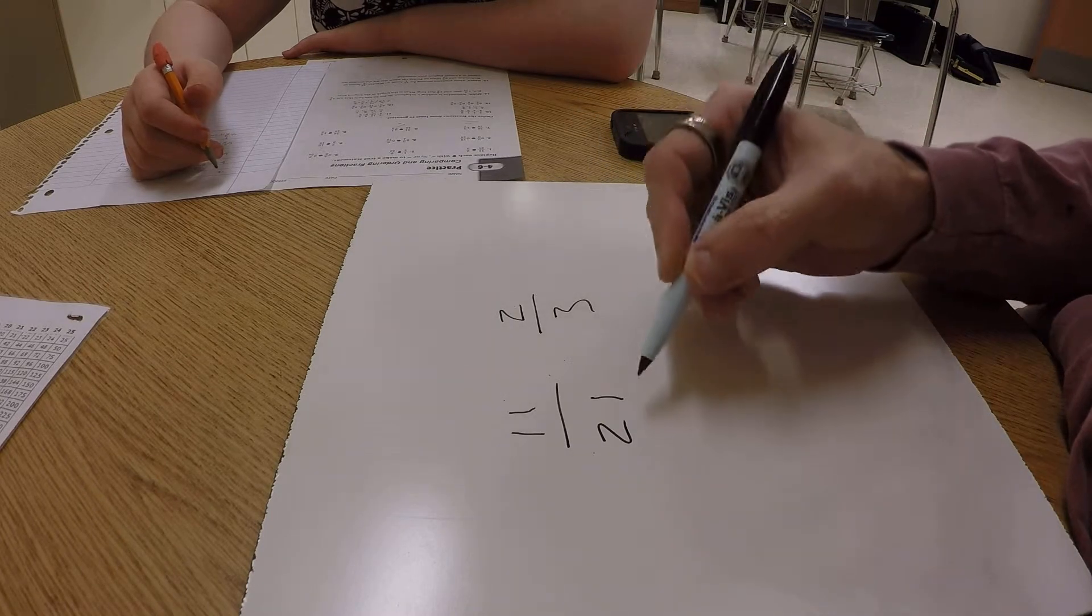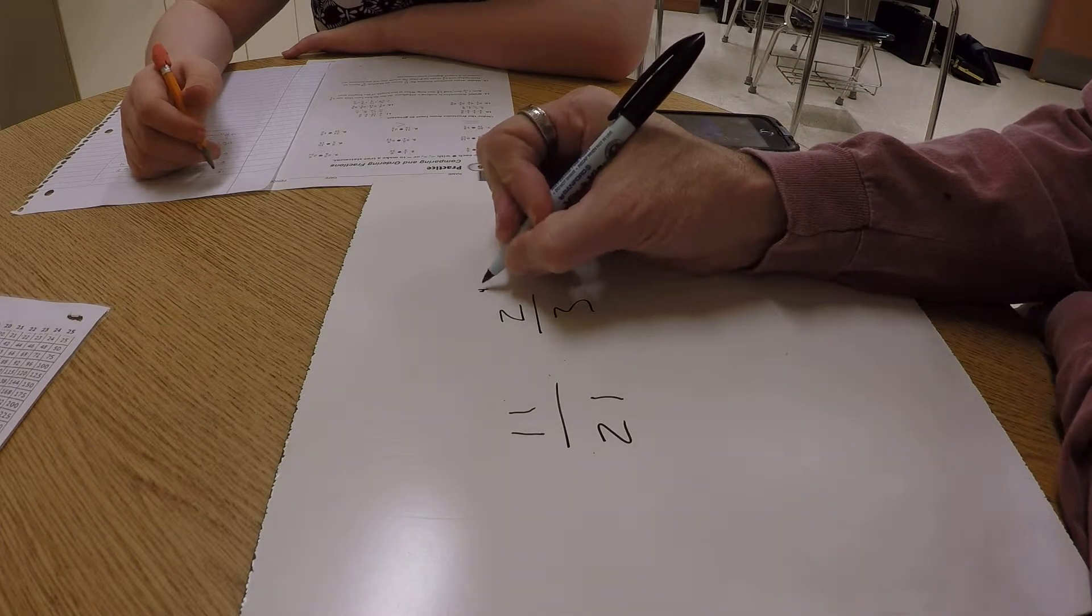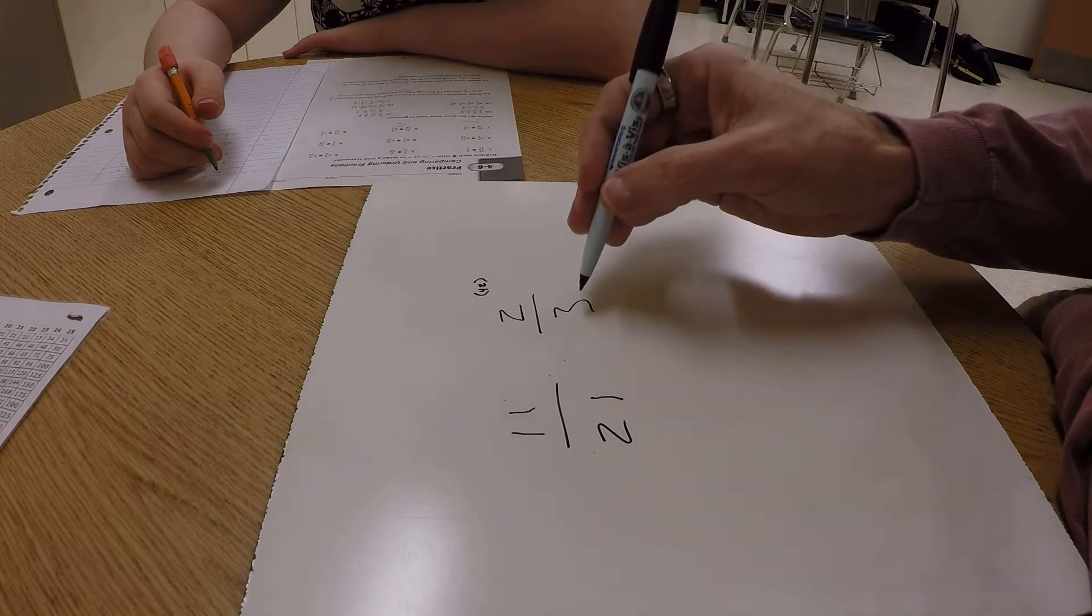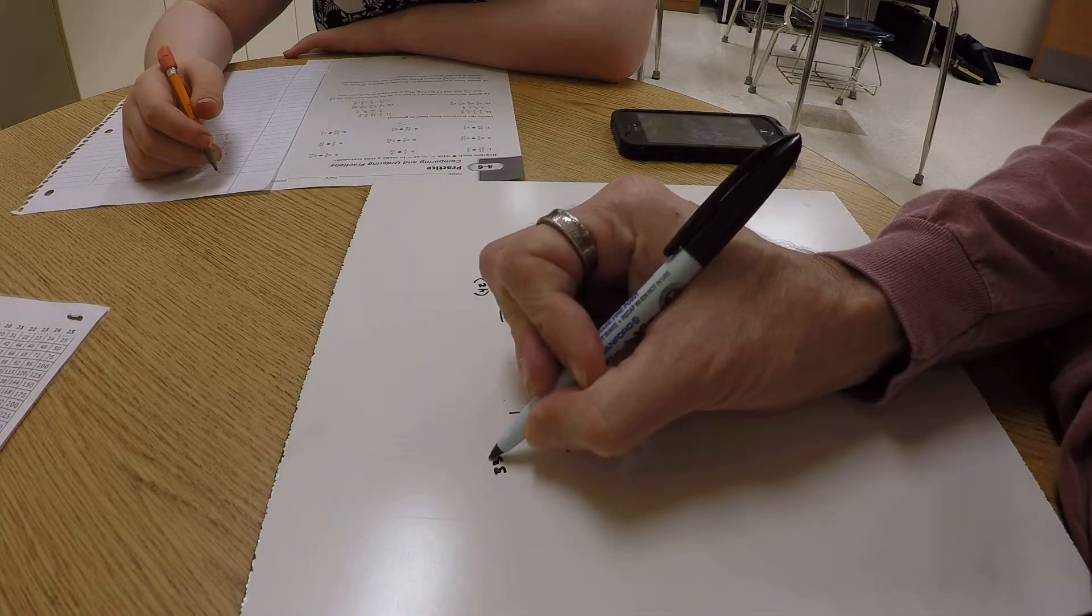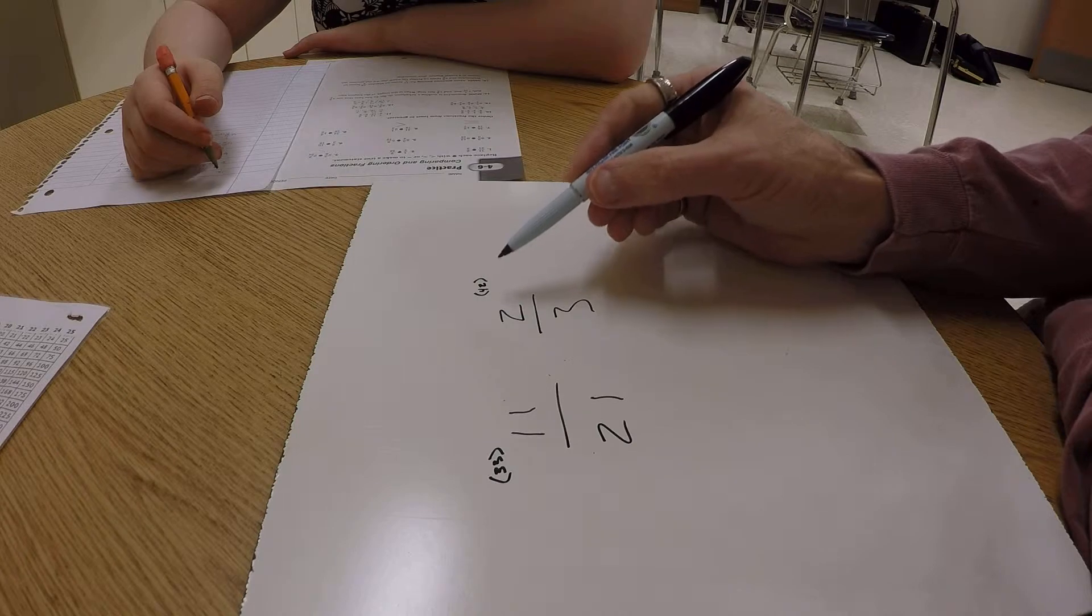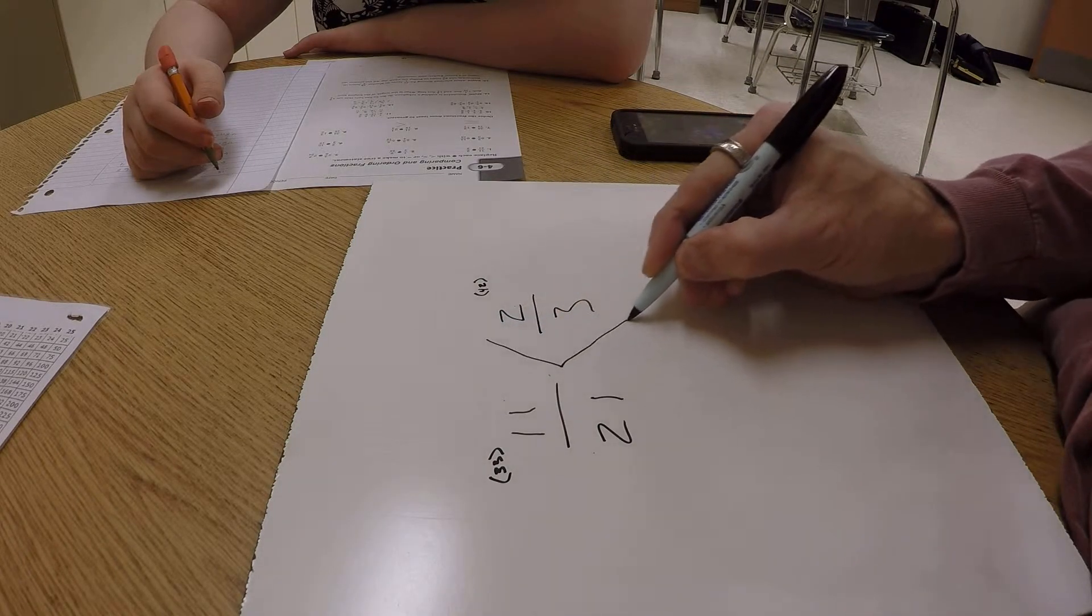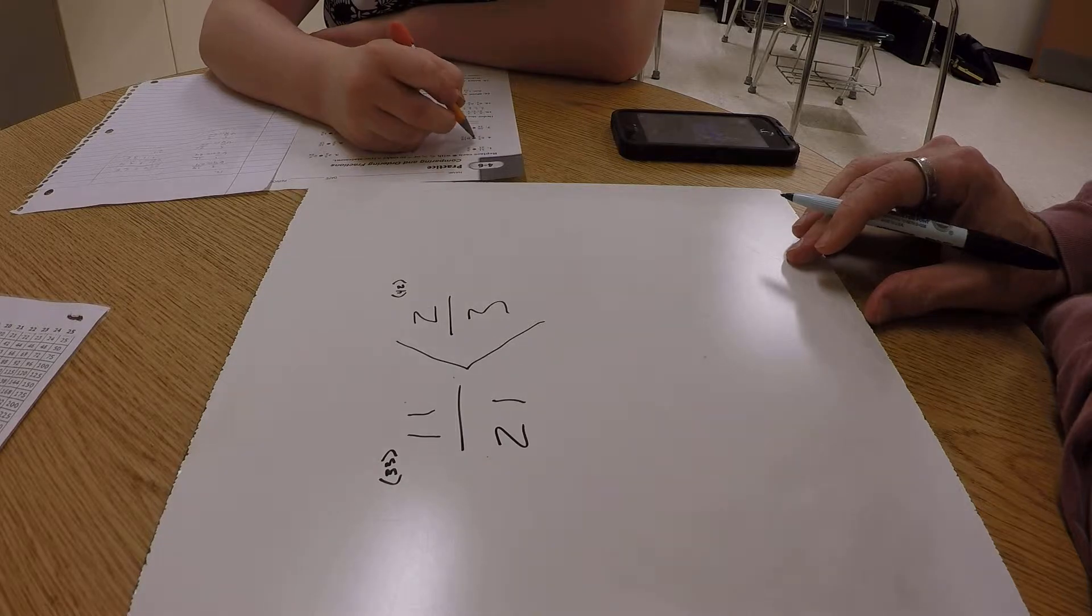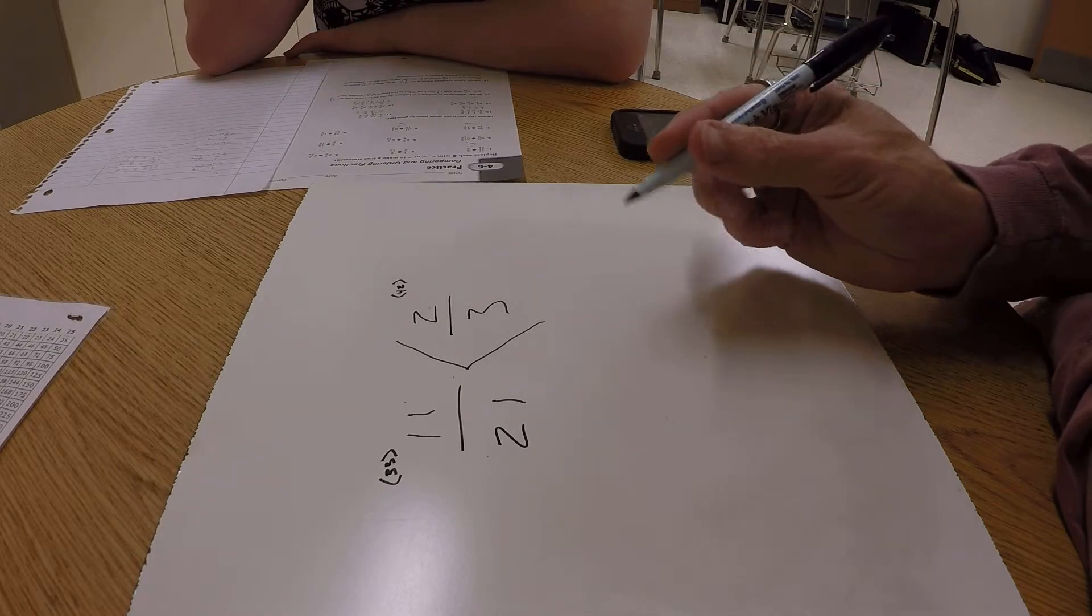21 times 2 is 42. I'm going to put 42 in parentheses so I don't forget it. Then 3 times 11 is 33. So I have 33 against 42. 42 being the bigger of the two, so 2/3 is going to be bigger than 11/21. Okay, let's do another one real quick before the bell rings.